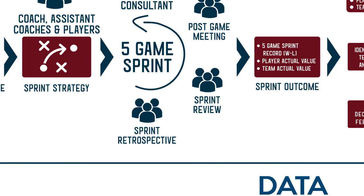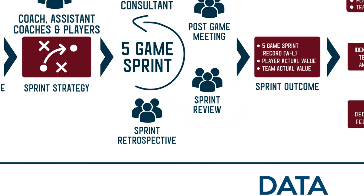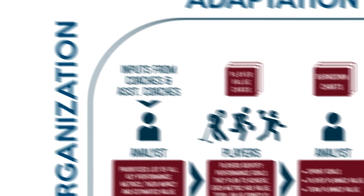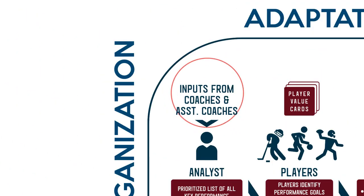The sprint ends with two events: the sprint review, which is a demonstration of sprint results to stakeholders, and the sprint retrospective, which is an examination of what went well, where the team and players fell short, and what could be improved. The aim of the retrospective is to ensure that the next sprint is more effective and efficient than the last, and that known outcomes from the metrics get fed back into the algorithms for the lead analyst to adjust the metric values.